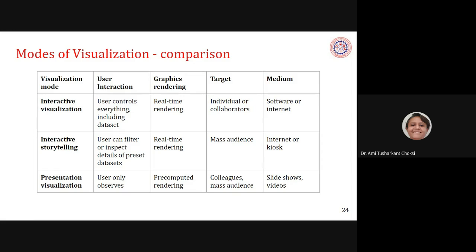For interactive visualization: user interaction means the user controls everything, including the data set — which data set they want to see, the user controls. Graphics rendering is real-time rendering. Target is individuals or collaborators. Medium is software, internet, or interactive platforms.